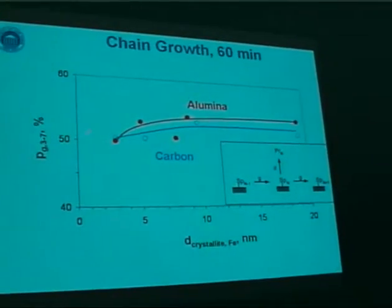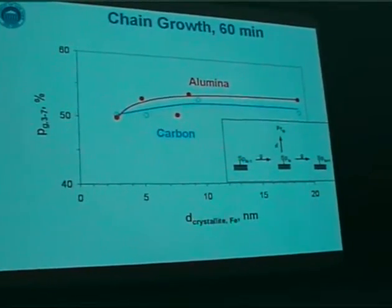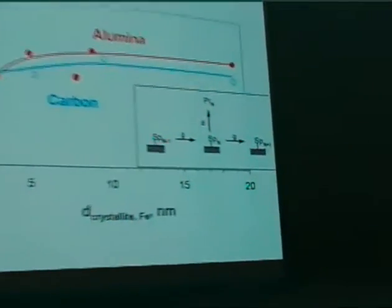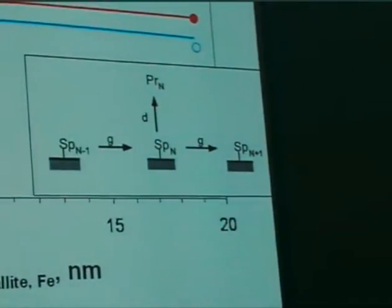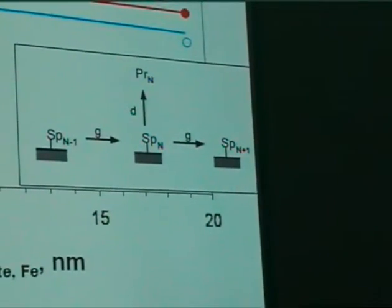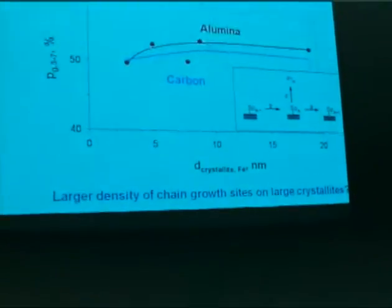Chain growth probabilities increase with increasing crystallite size. It may be the case that chain growth is more demanding than methane formation alone, and it is possibly more likely that we have a larger density of chain growth sites on large crystallites as opposed to the fairly simple methane formation sites.